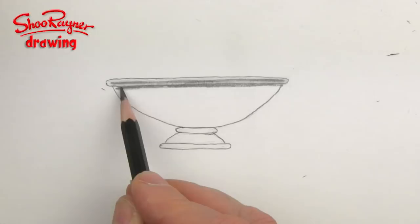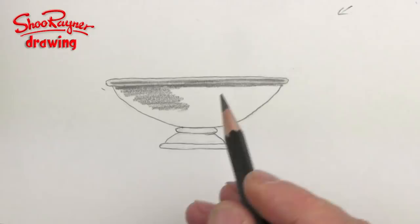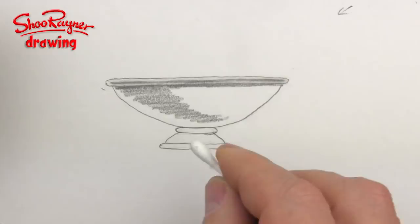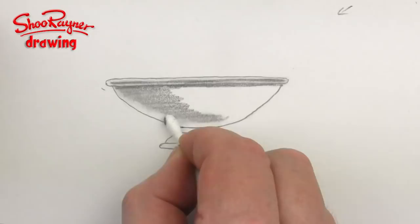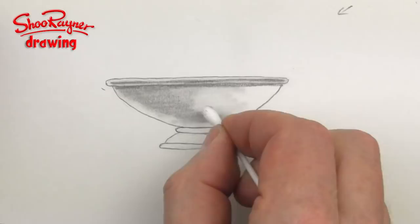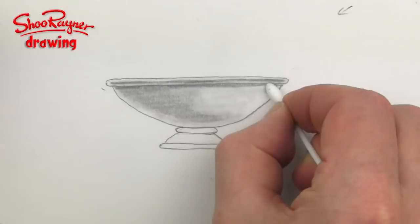And then I'm going to imagine the light is coming this way so most of the shadow on the bowl is going to be underneath there. So then I can use this cotton bud to smudge all that pencil that I've just done to get this kind of softer, more 3D photographic kind of effect.